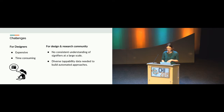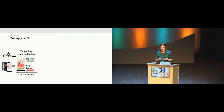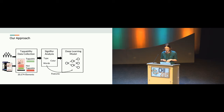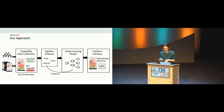We collected this data across a large corpus of mobile app screens and had people label tappable and not tappable elements. From there, we analyzed a set of signifiers to understand their prevalence in the dataset, curated from informal design principles for signifying tappability. We used these signifiers to build a deep learning model to predict the tappability of interface elements.